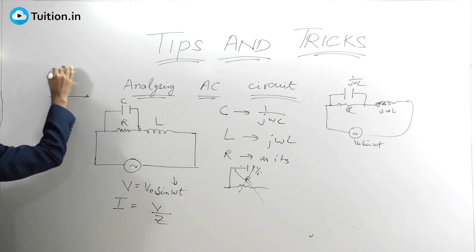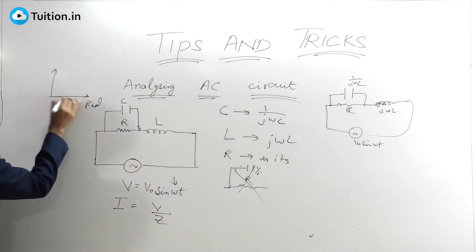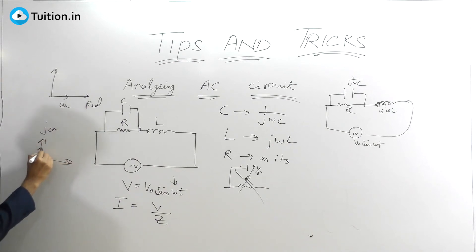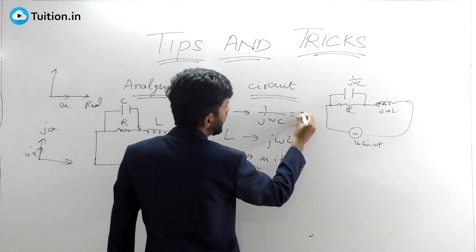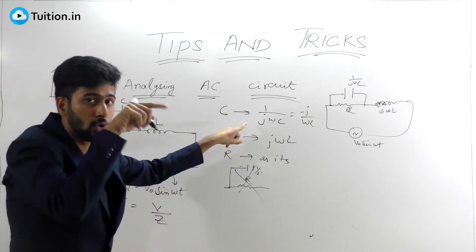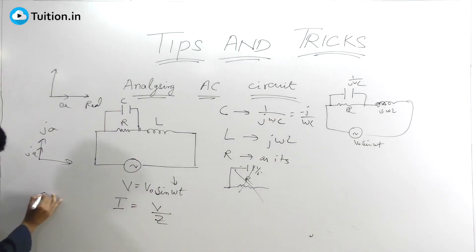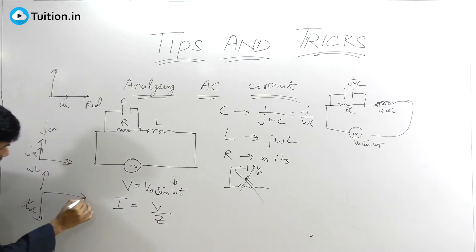What do you mean by 1/jωC? Any quantity on the real axis — remember, they are all complex numbers. This j is nothing but your iota. Any real quantity A: if I say jA, that means I'm shifting this quantity onto the y-axis. So 1/jωC can also be written as −j/ωC, because multiplying j on top and bottom gives j×j = −1, leaving −j on top. So −j/ωC means 1/ωC pointing downwards. jωL means ωL pointing upwards, and R is on the real axis.